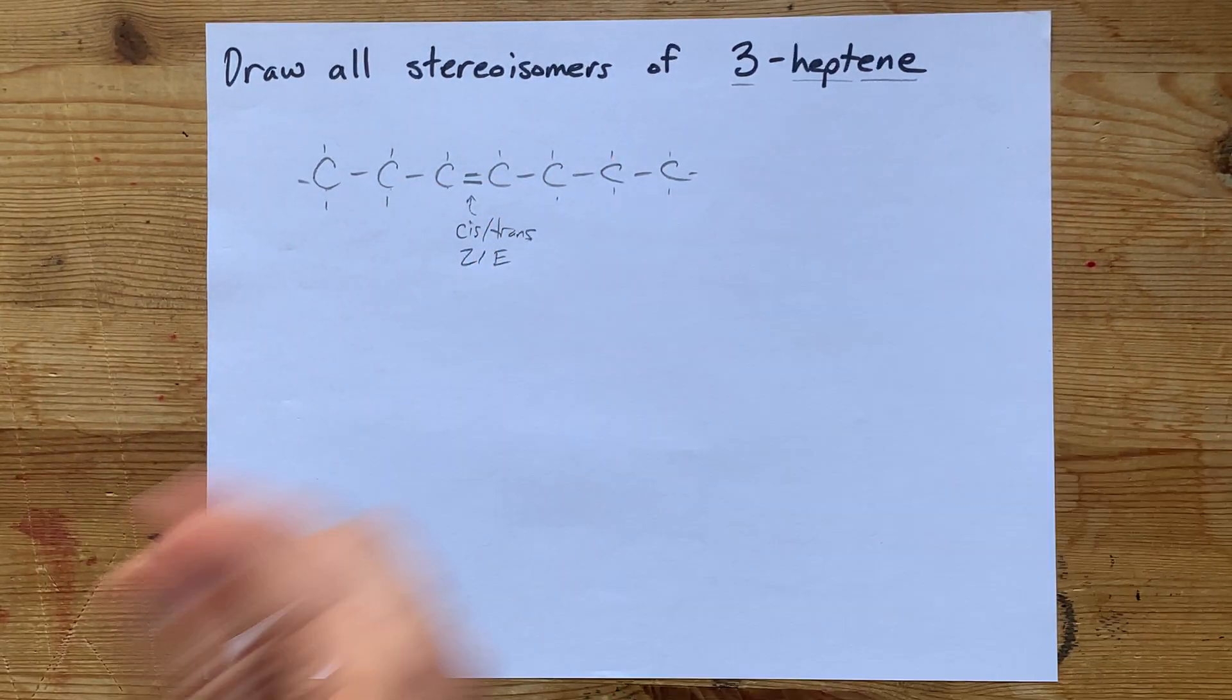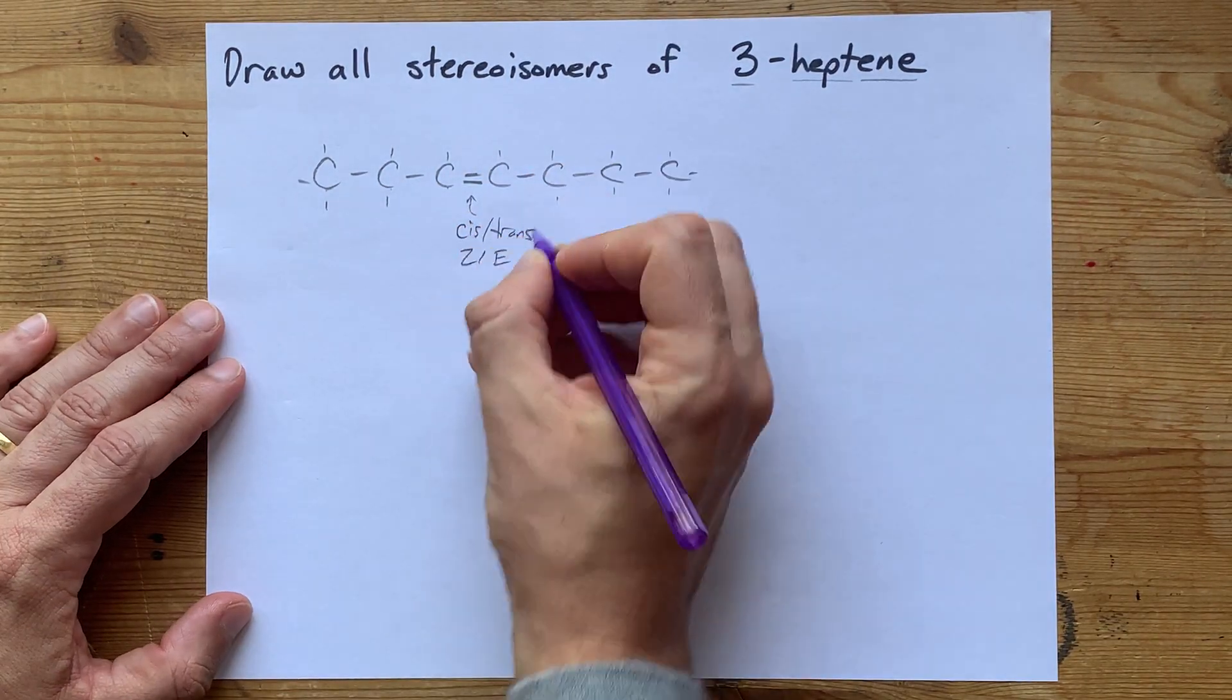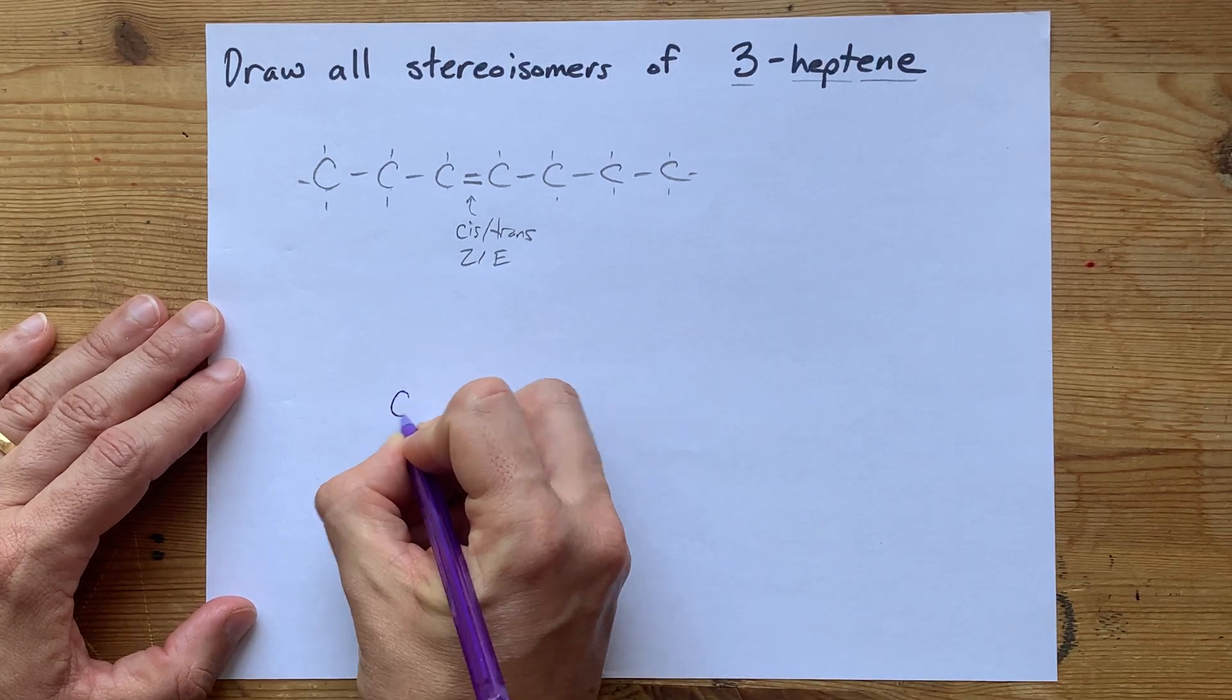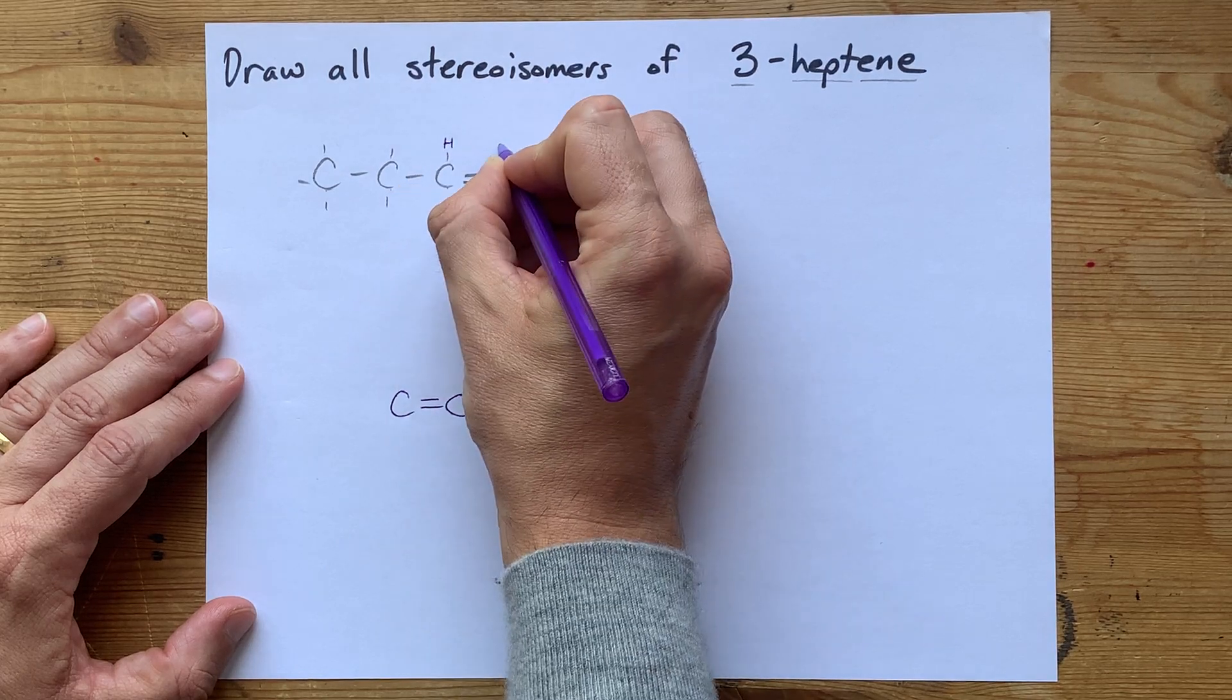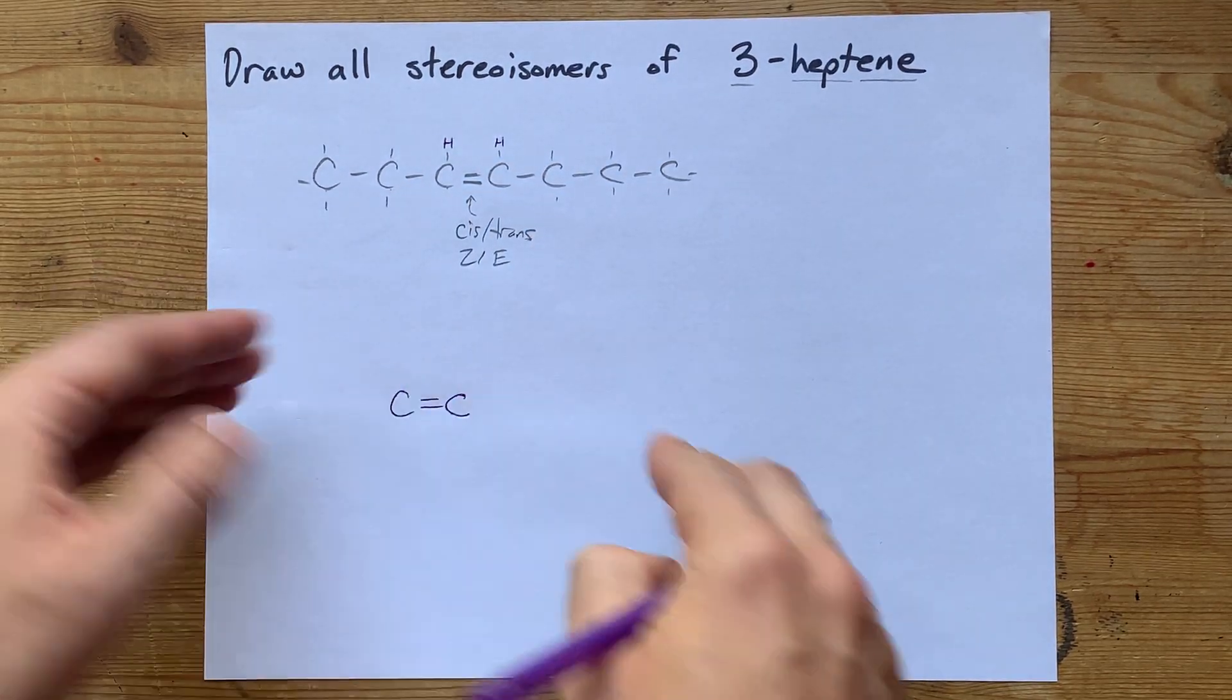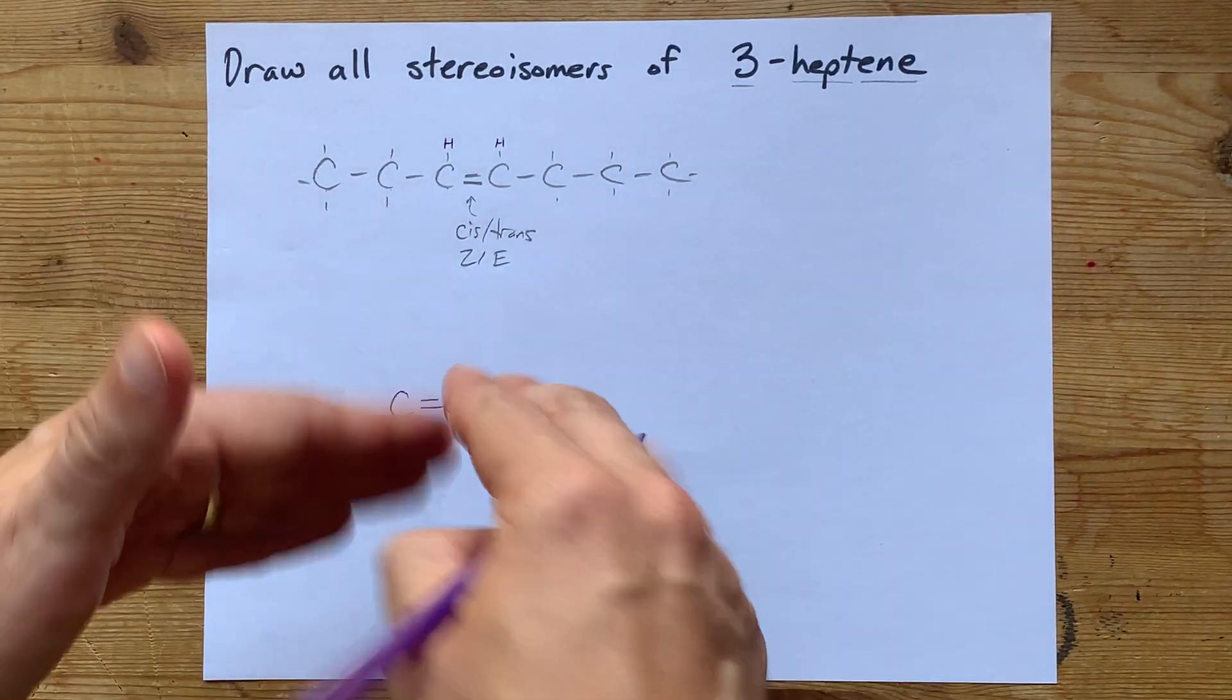So, we're just going to carefully draw those, and we'll be done. Cis is what you get when you have a double bond, and then the same thing is found on both sides of the double bond horizontally.